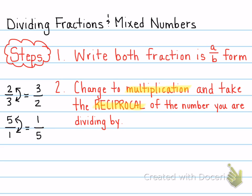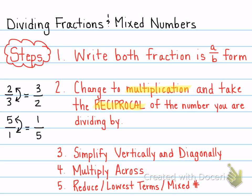The last three steps then are exactly the same steps as when you multiply. After you've taken the reciprocal, you're going to simplify vertically and diagonally. You will multiply across and then you're going to make sure that it's completely reduced.